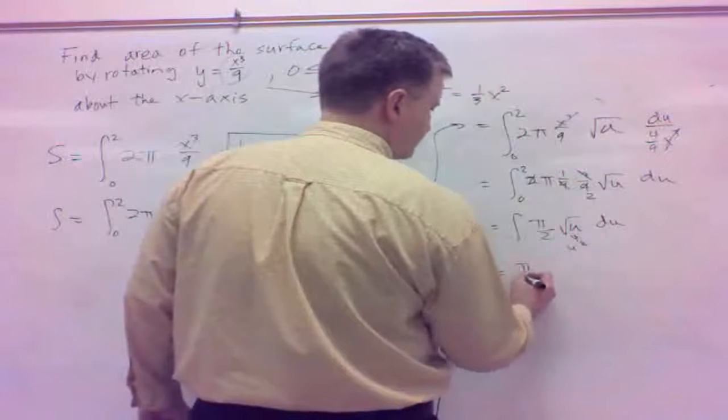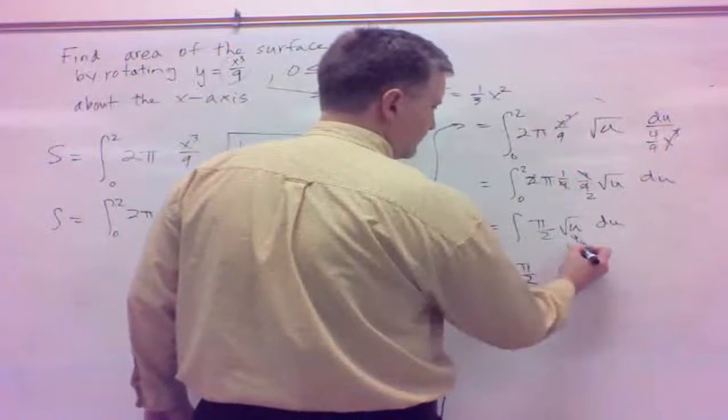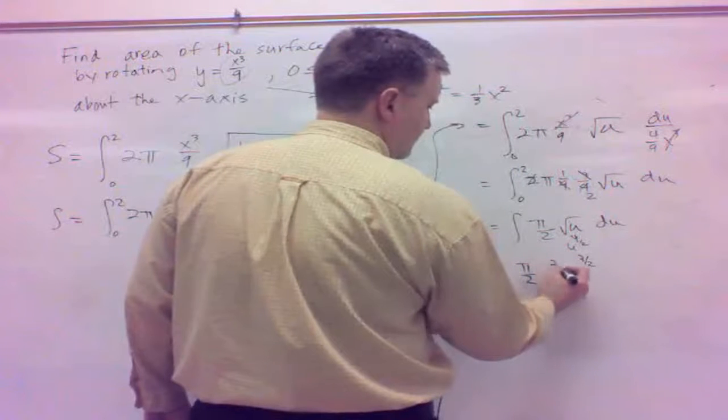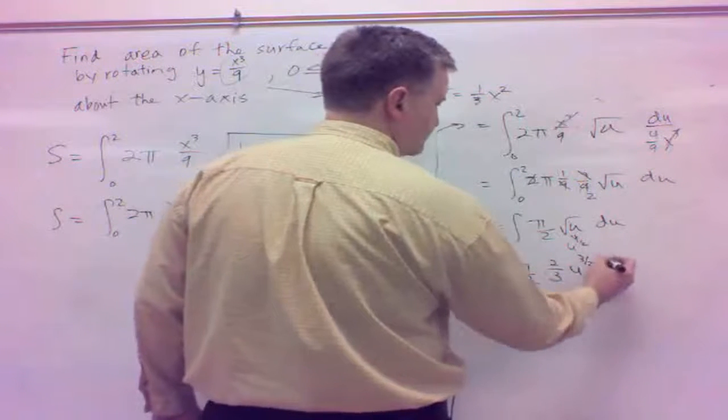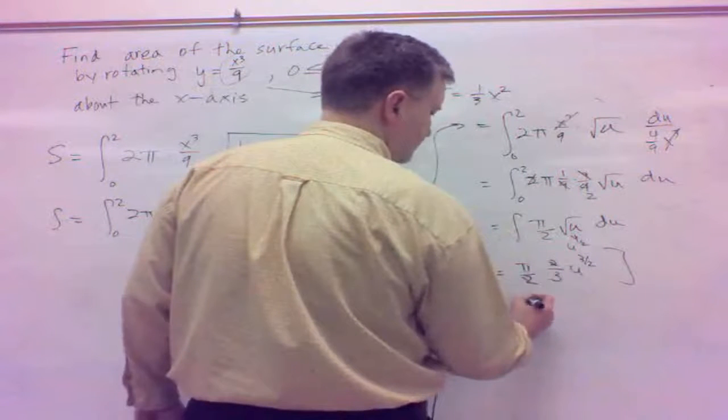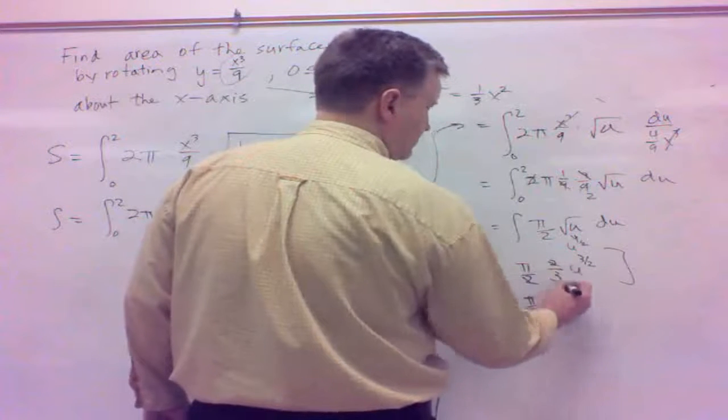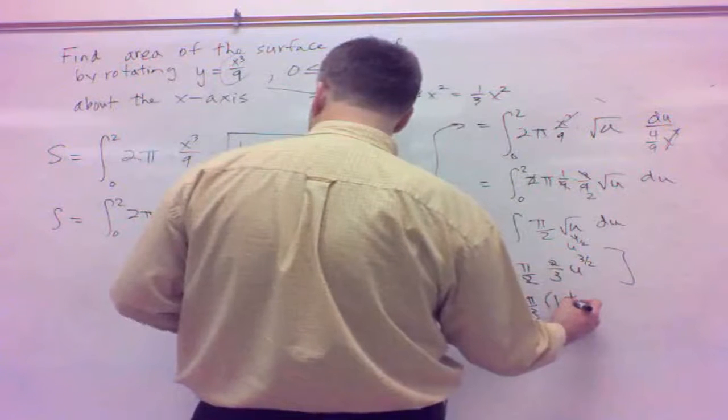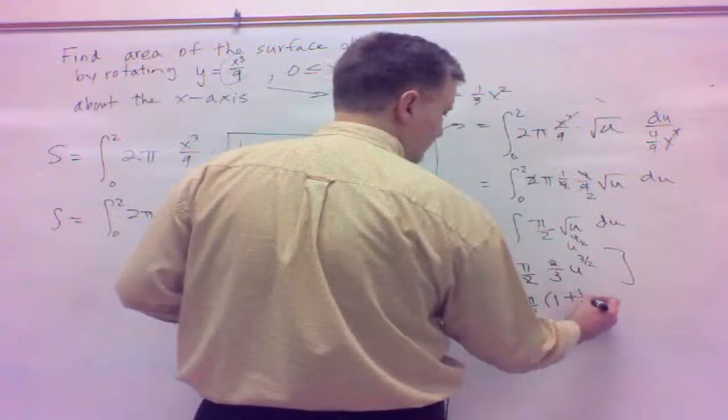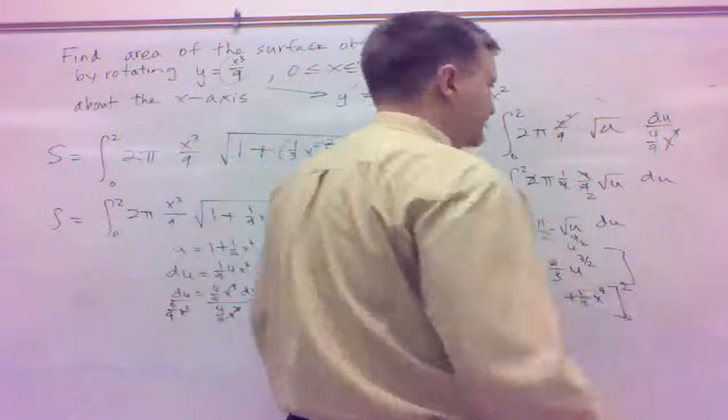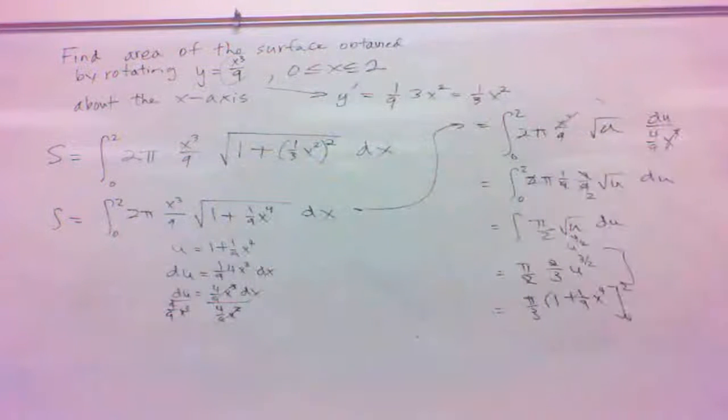u to the 1-half is the square root of u. So my anti-derivative, I have pi over 2 times u to the 1-half, so I'll get 3-halves. Divide up here, so it's 2-thirds. Do the limit, so it'd be, oh, 2's canceled. So it'd be pi over 3, u is 1 plus 1-ninths, x to the 4th. So that's why I'm going to run 0 to 2. See if you got that.